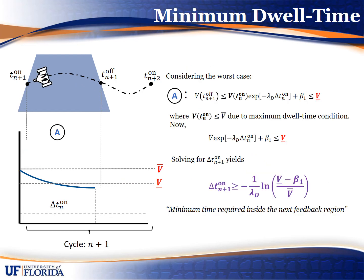Likewise, there's a minimum dwell time condition — the minimum amount of time needed to remain within the field of view, denoted by delta t on — that we use to enforce the need for the Lyapunov function to decrease to a value small enough, specifically to be underbar, before leaving the field of view. The minimum dwell time is the negative of the inverse of the decay rate times the natural log of the minimum tolerance minus the residual error bound divided by the maximum error tolerance, and these are all known constants.